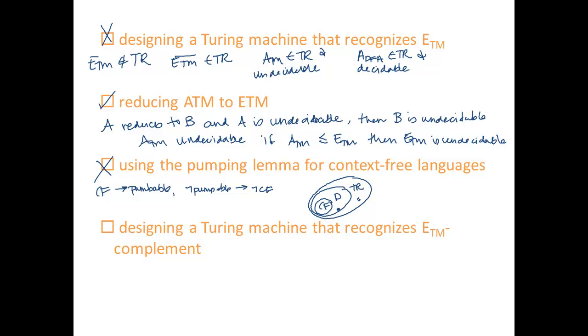Last one, designing a Turing machine that recognizes E_TM complement. So here I mean E_TM bar or E_TM complement. This is a similar case as the first option. So even though E_TM bar is Turing recognizable, we can't conclude anything about a language just by knowing that it's Turing recognizable. We can't conclude that it's undecidable or decidable. So this doesn't work either.